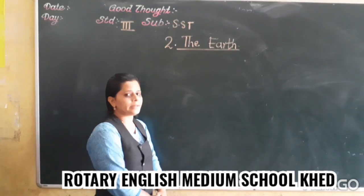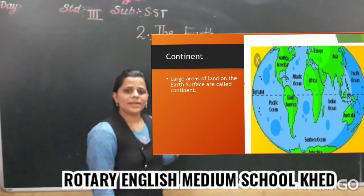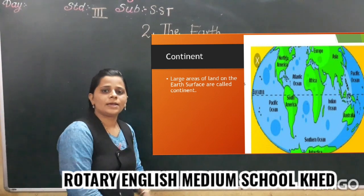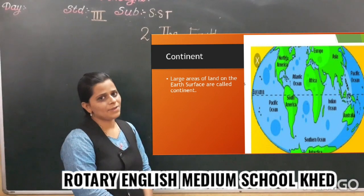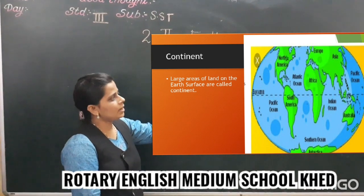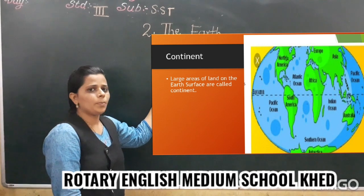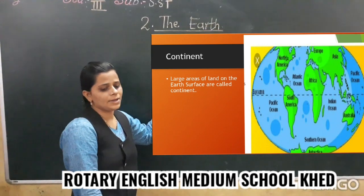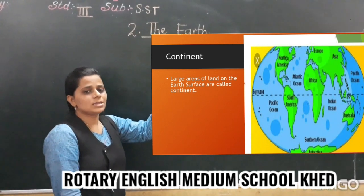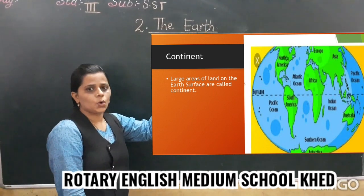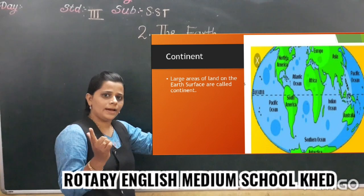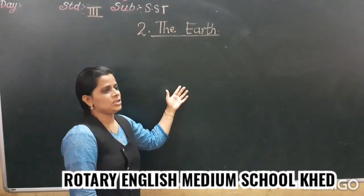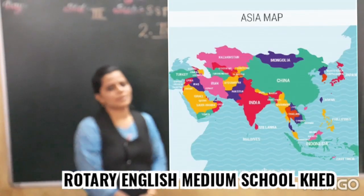Now let's talk about continents. What is a continent? Large areas of land on the Earth are known as continents. There are seven continents: North America, South America, Europe, Africa, Asia, Australia, and Antarctica. Our country lies in the continent of Asia. Asia is the largest continent in the world.